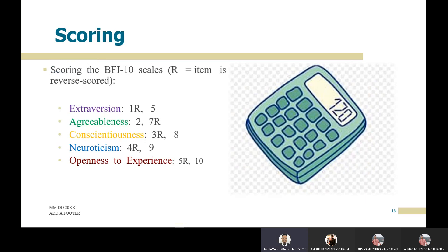This is the scoring key for BFI-10. 'R' indicates reverse-scored items. The five constructs are extraversion, agreeableness, conscientiousness, neuroticism, and openness to experience. For the interpretation of these constructs, I will pass to Ahmad Muizuddin.